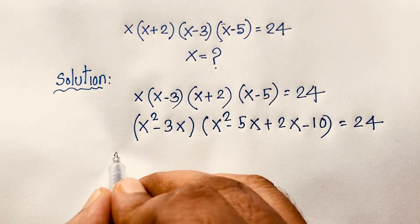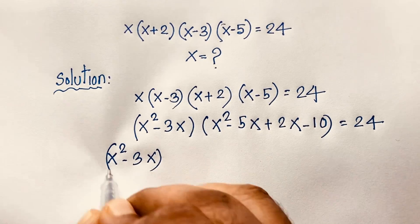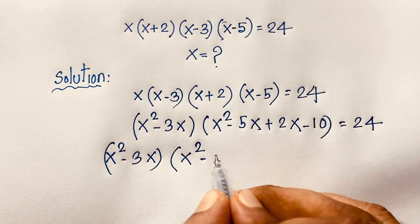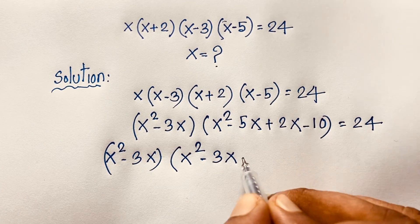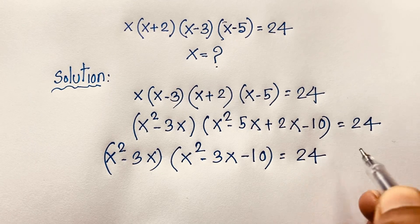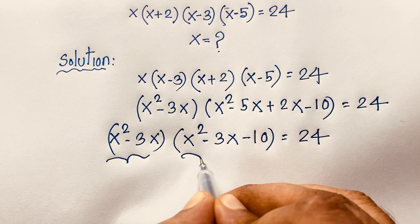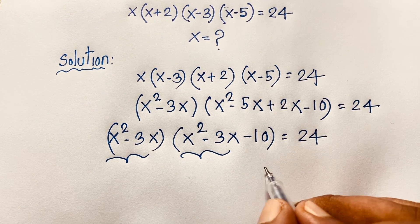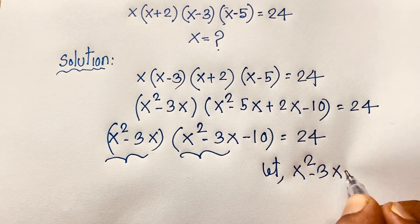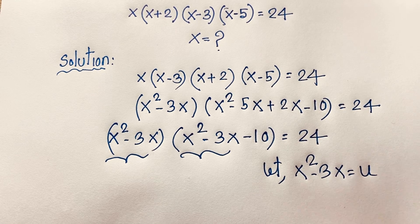Now here we have x squared minus 3x, times x squared minus 3x minus 10, is equal to 24. At this moment, you can see both brackets contain x squared minus 3x. So let x squared minus 3x equal u.